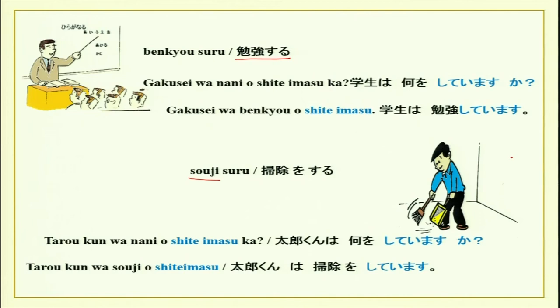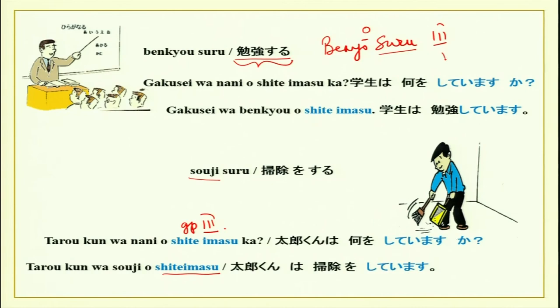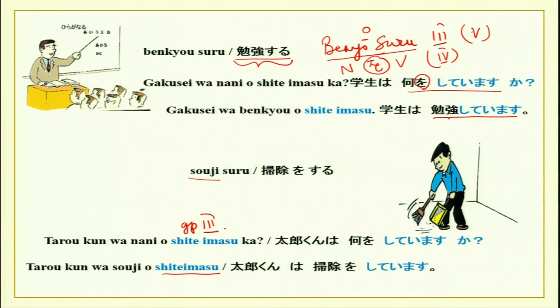Tanaka-san wa nani wo shite imasu ka? Tanaka-san wa uchi no souji wo shite imasu — Tanaka-san is cleaning the house alone. Souji means cleaning up, sweeping, mopping. You can say souji wo shite imasu or o-souji wo shite imasu — both mean the same thing. When you say souji suru, it is a group three verb; when you say o-souji wo suru, souji becomes a noun and suru is the verb with the particle wo. The meaning is exactly the same with a slight grammatical difference.